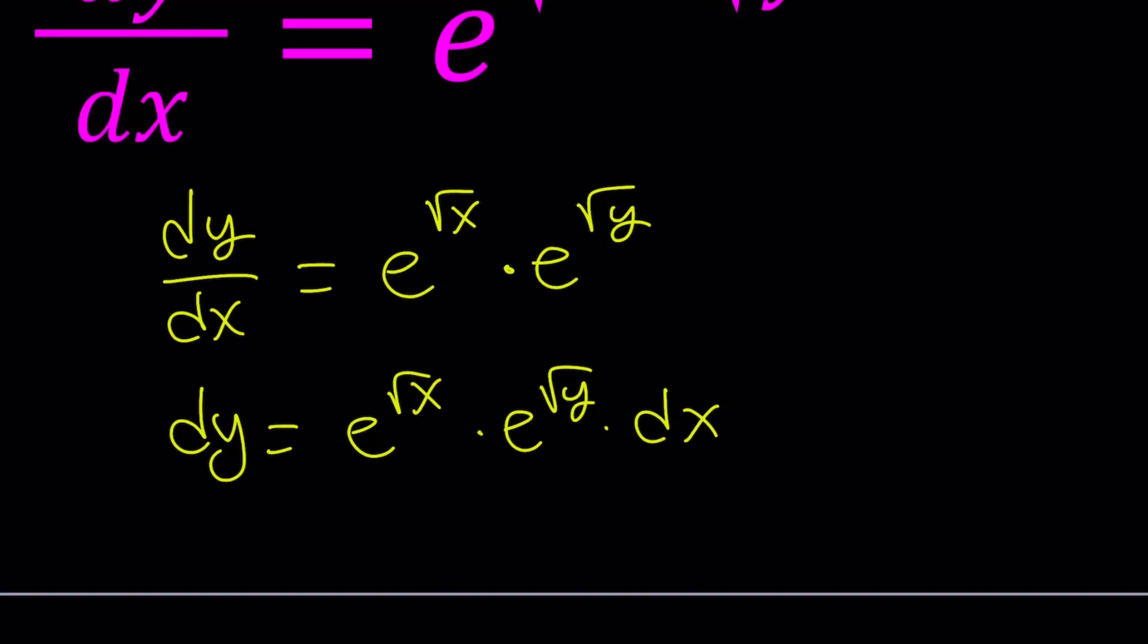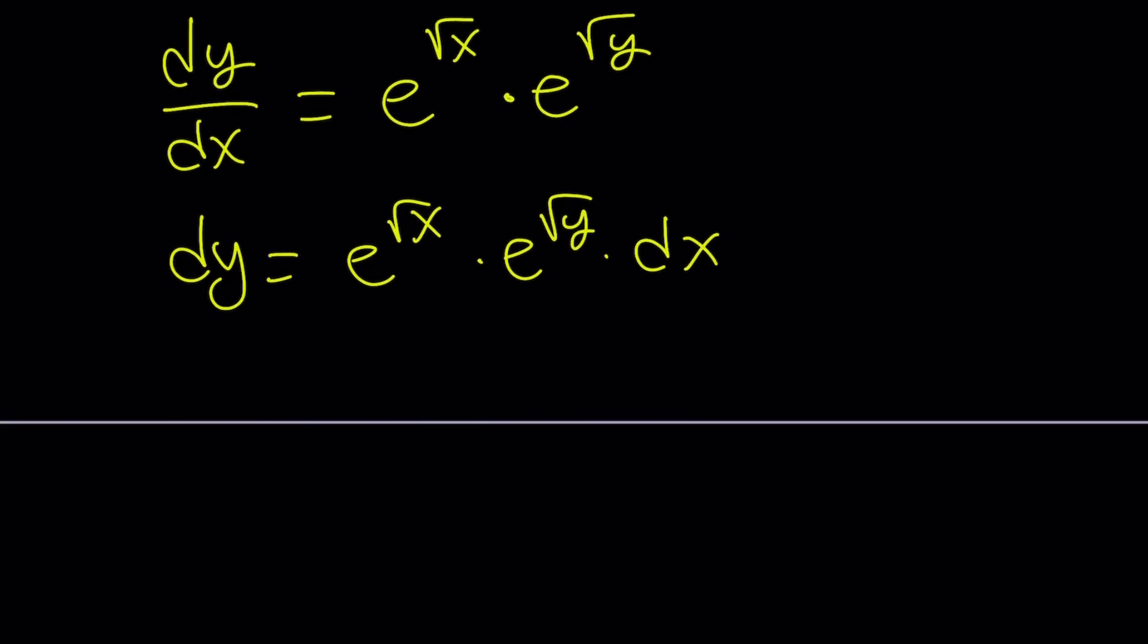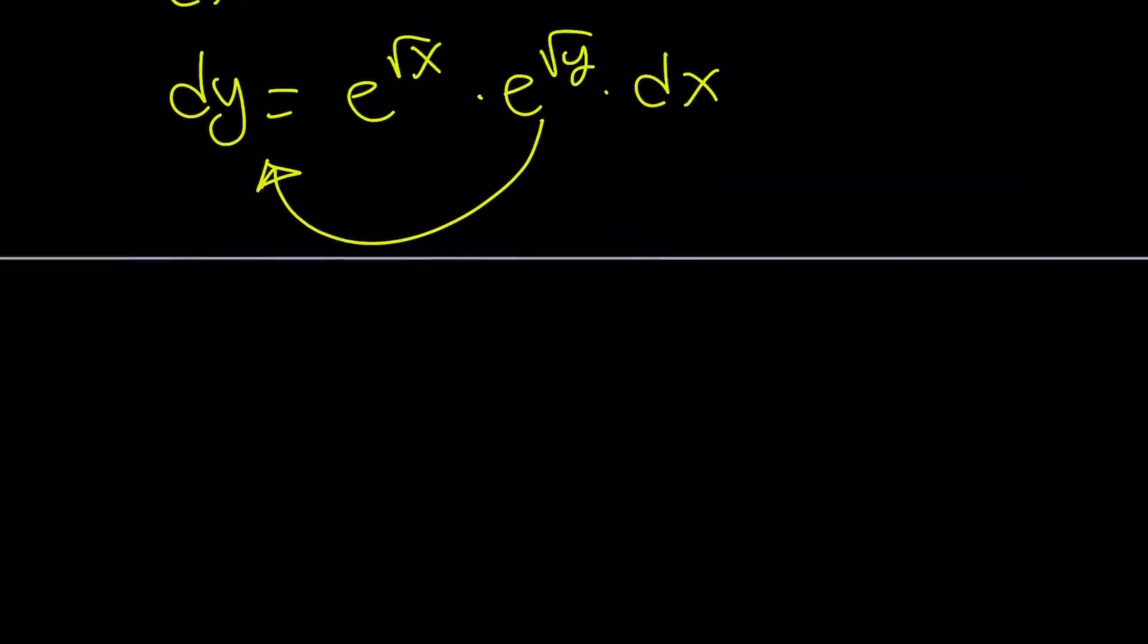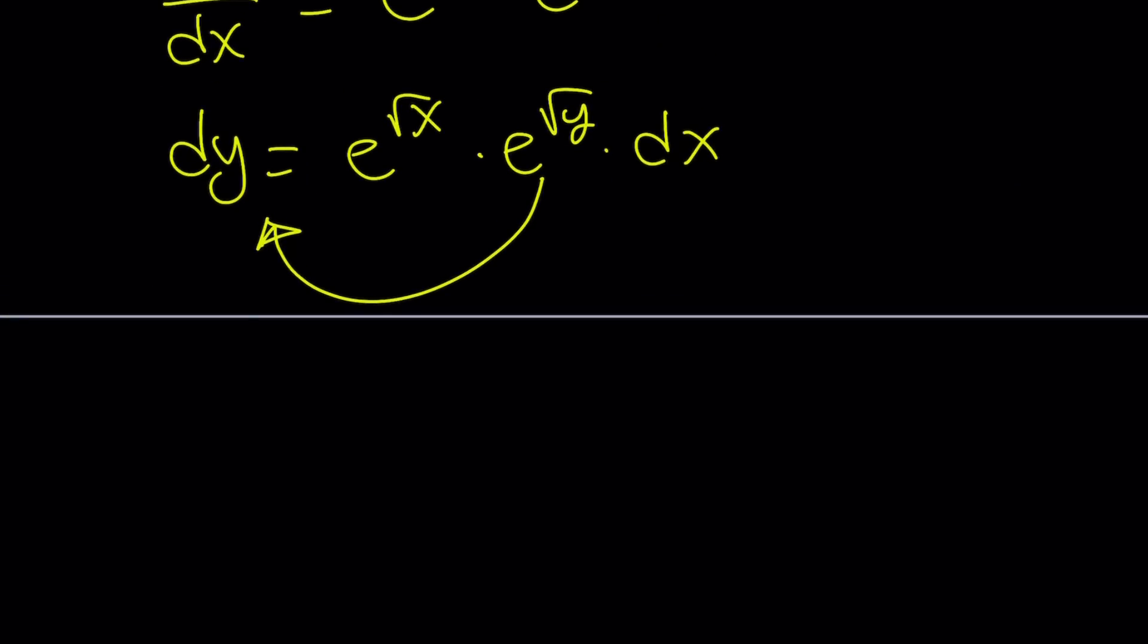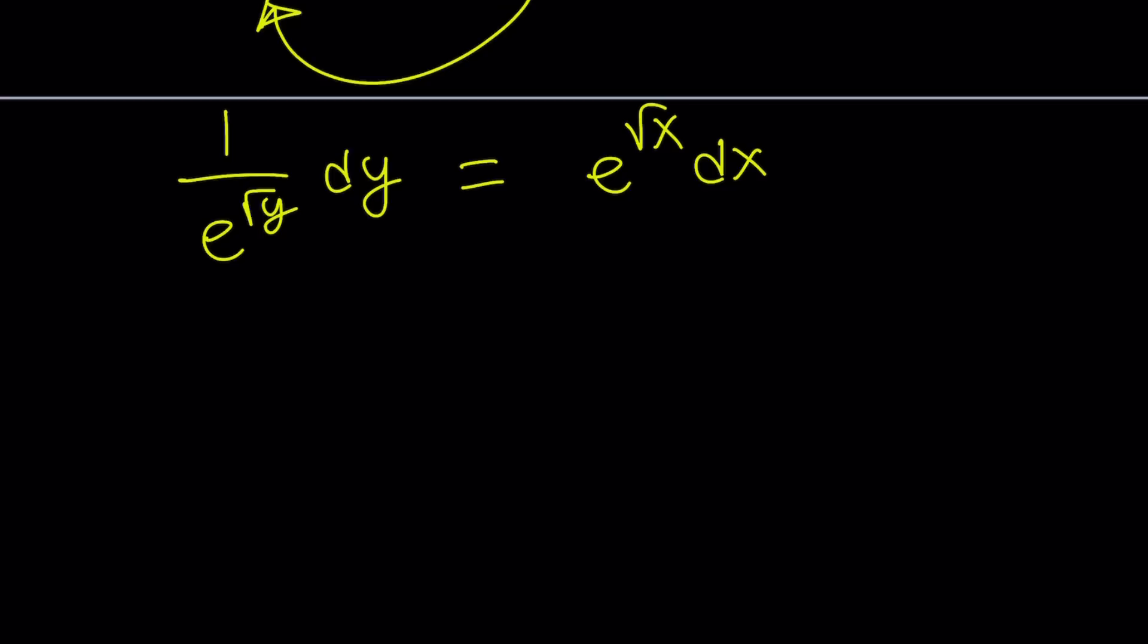And now we want to put the y's together and the x's together. So let's go ahead and bring this over to the left by division. So we get dy divided by e to the power square root of y, or I can write it as 1 over e to the power square root of y dy equals e to the power square root of x dx. And then the left hand side can be written as e to the power negative square root of y by using negative exponents.